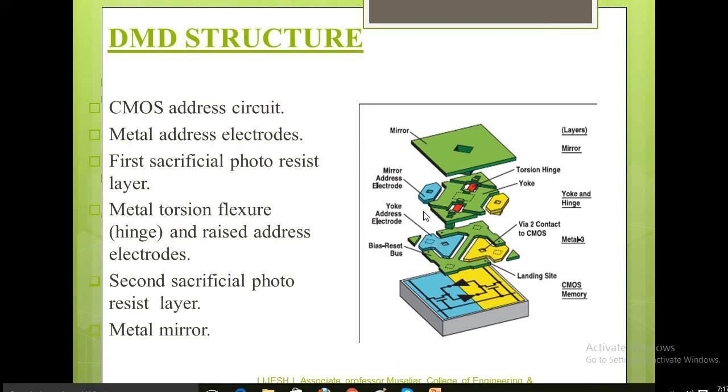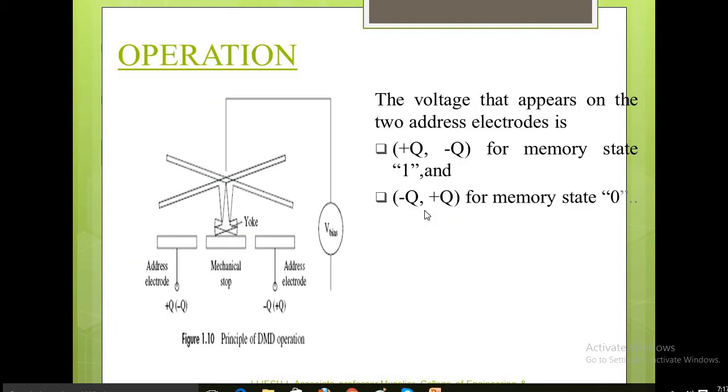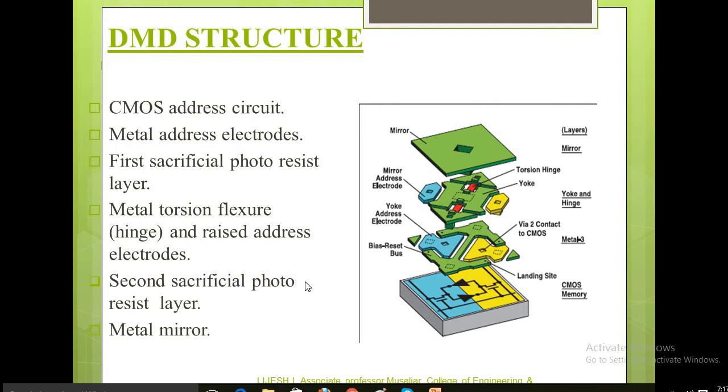The yoke and electrodes - these are the two address electrodes. Each one is connected on a yoke, which in turn is connected to support posts by hinges. Two pairs of electrodes control the position of the mirror by electrostatic attraction. Each pair has one electrode on each side of the hinge, one positioned to act on the yoke and the other acting on the micromirror directly.